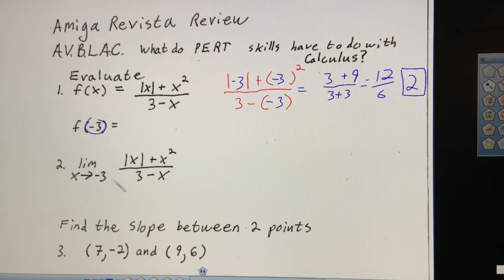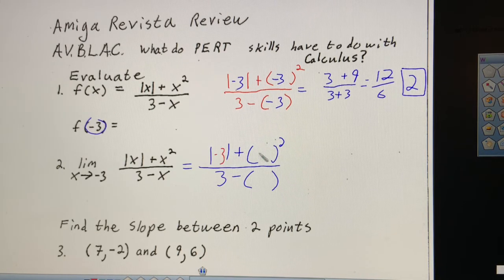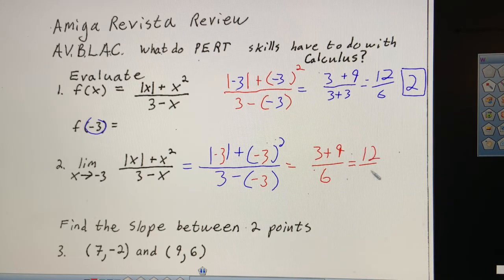Same process here — notice it's the same numbers. In calculus, we have to find the limit instead of just evaluate. You evaluate in calculus, but you also do other stuff like this limit process. So absolute value of something plus something squared over 3 minus something, and that something is negative 3. We already did it, so it gives us the same result: 12 over 6 equals 2.